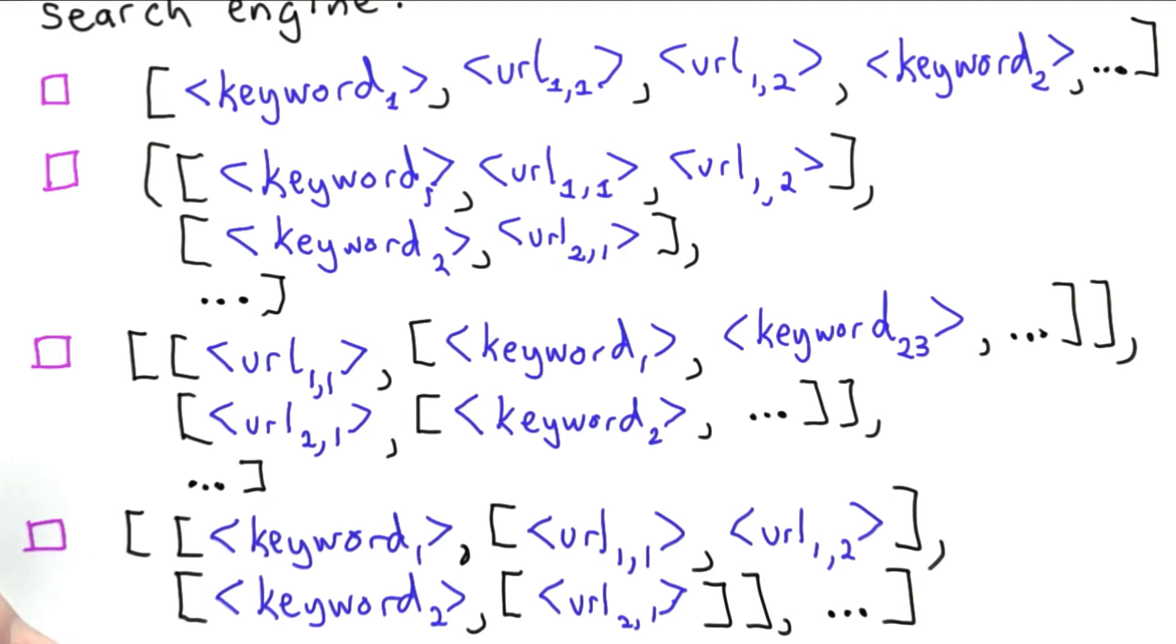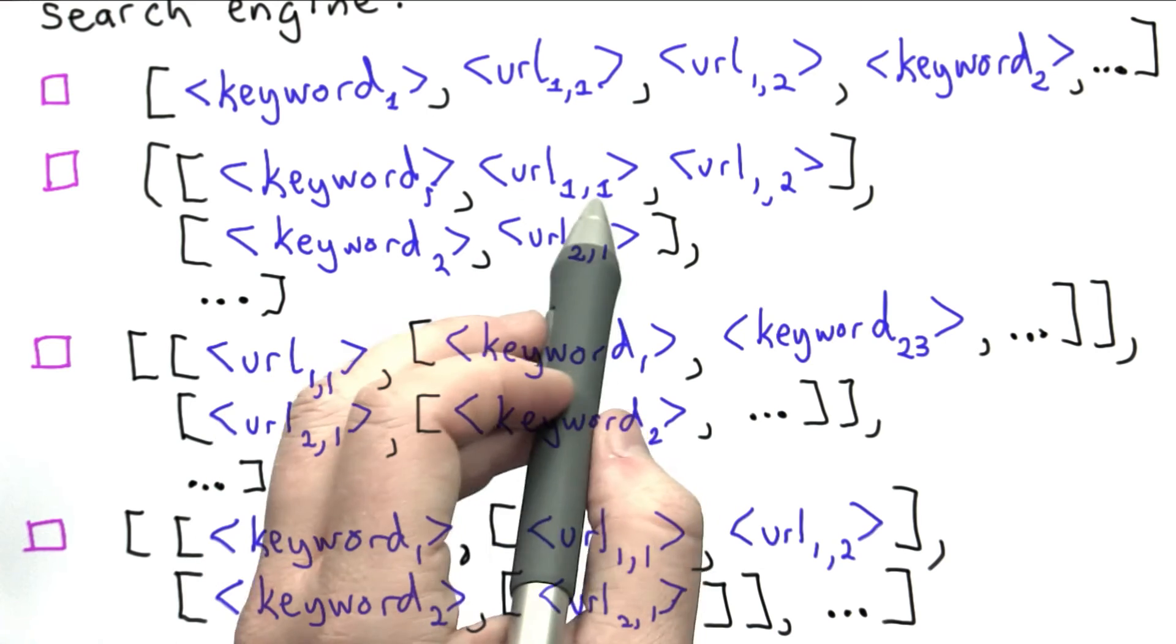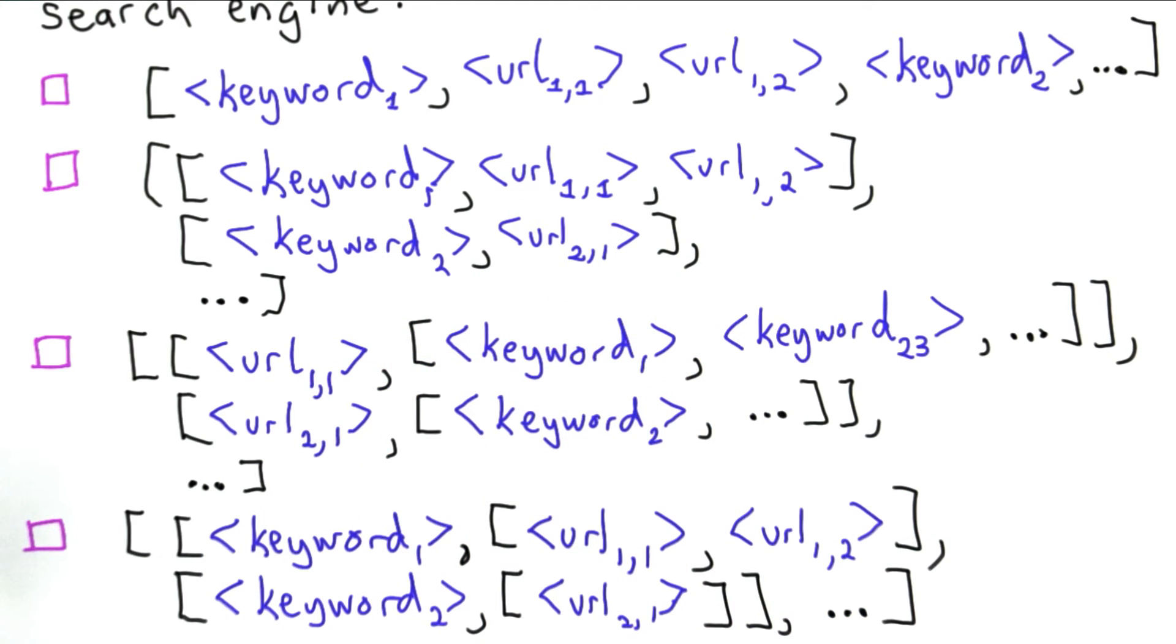The second option would be we could have a list containing as its elements lists. And each element would be a list of a keyword followed by the URLs where that keyword appears.